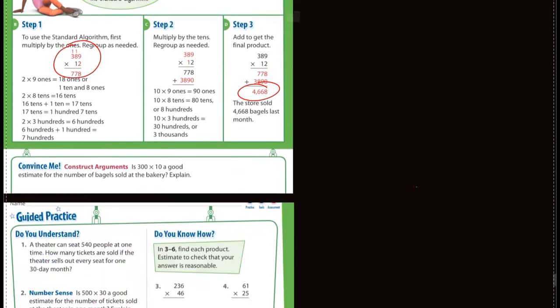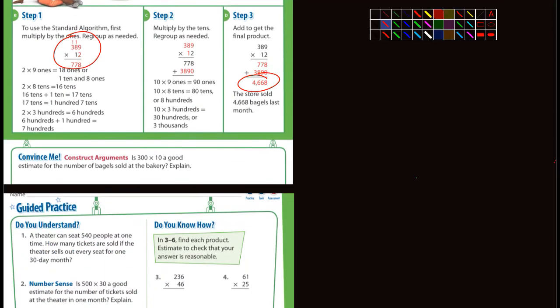So I'm going down to the 'convince me.' It says is 300 times 10 a good estimate for the number of bagels sold? Well, 10 would work in place of the 12. 300 would not work very well. I think I would say no. 389 is closer to 400 than 300, so I would have done 10 times 400. I think most of you would have done that also.